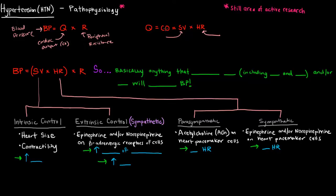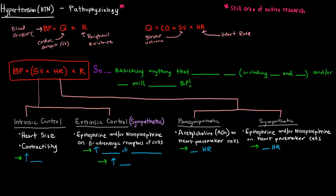Cardiac output can be further divided into stroke volume and heart rate. Stroke volume is basically how much blood is expelled by the heart with each beat, and heart rate is how fast the heart is beating. Blood pressure is related to stroke volume, heart rate, and resistance — increasing any of these values increases blood pressure.